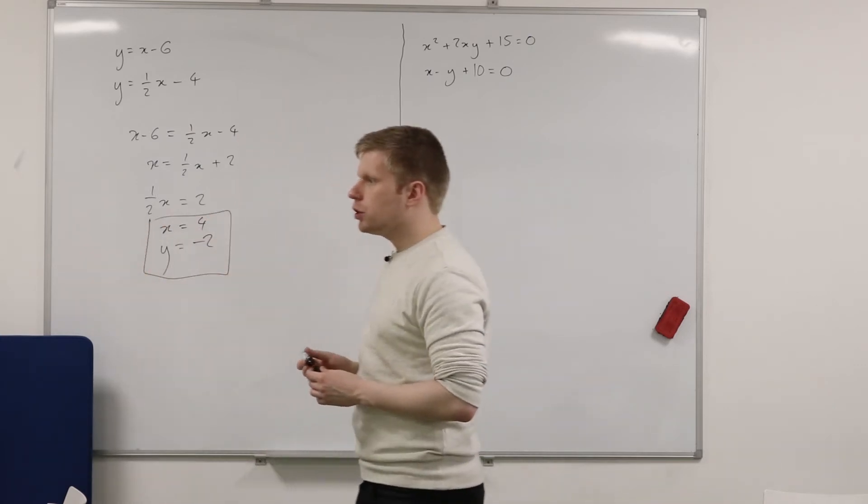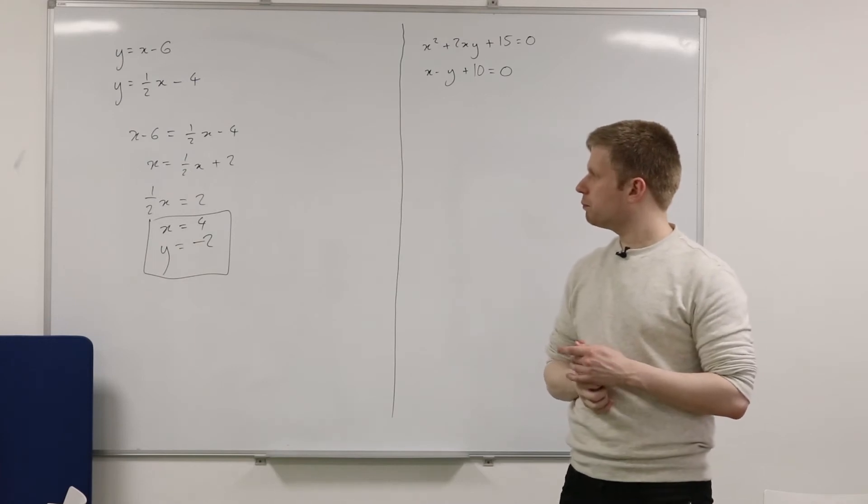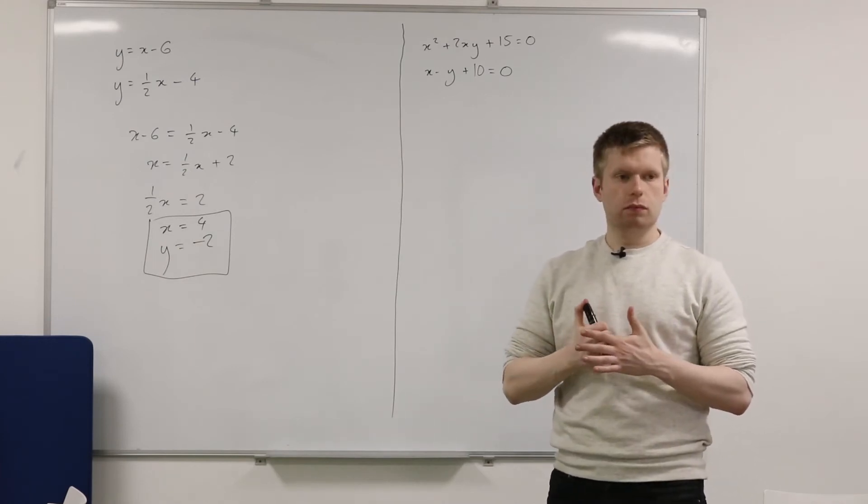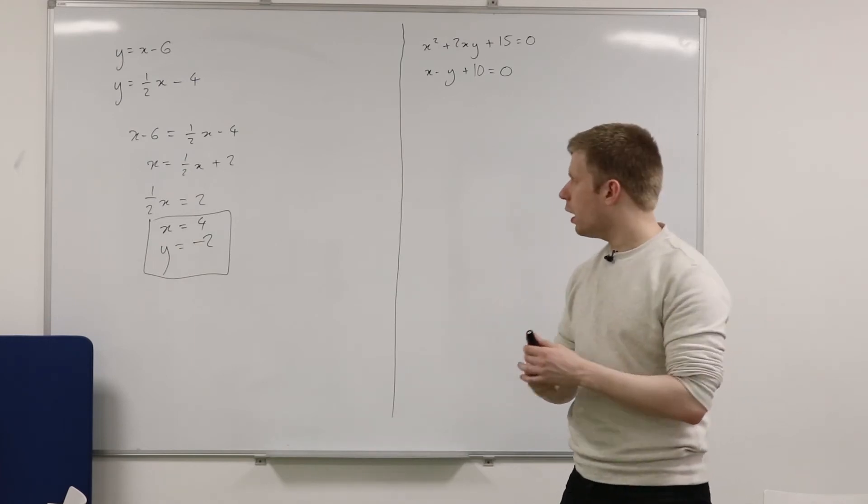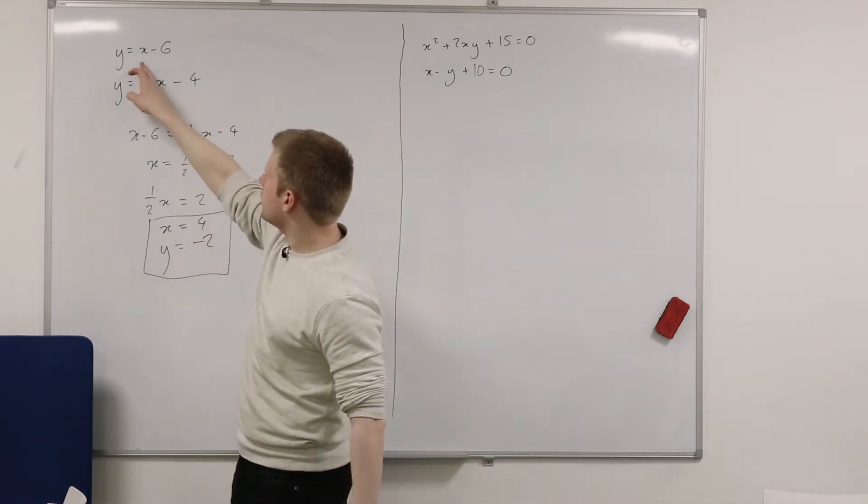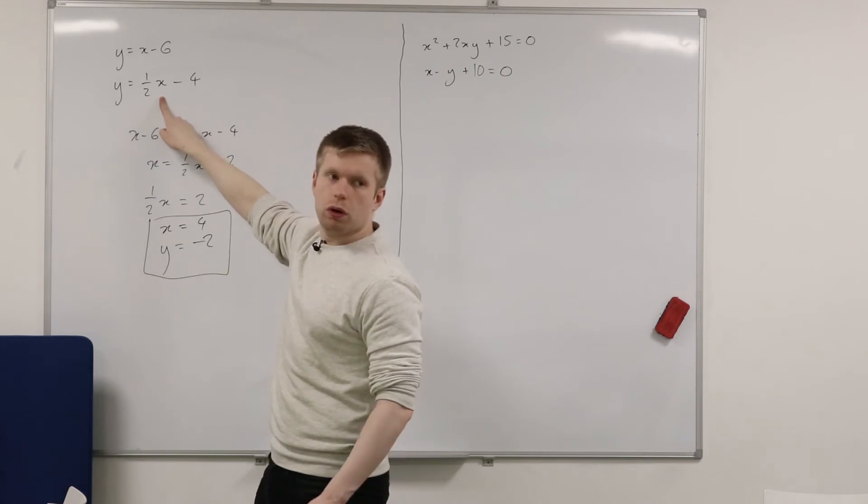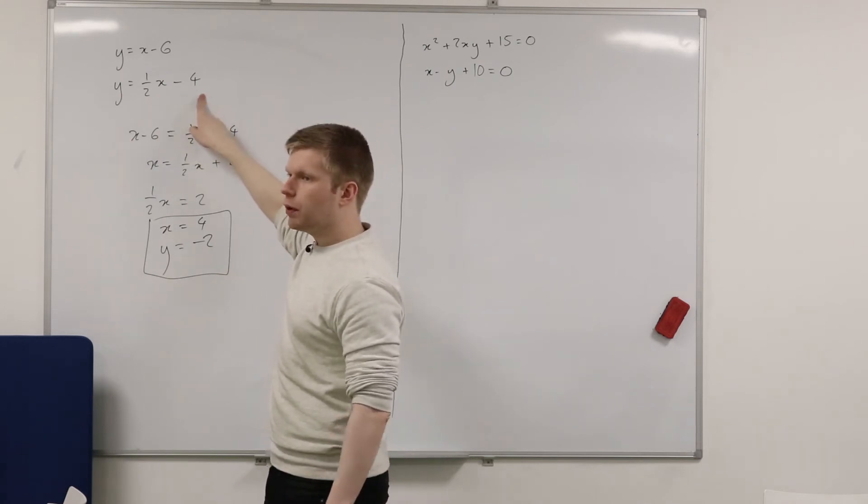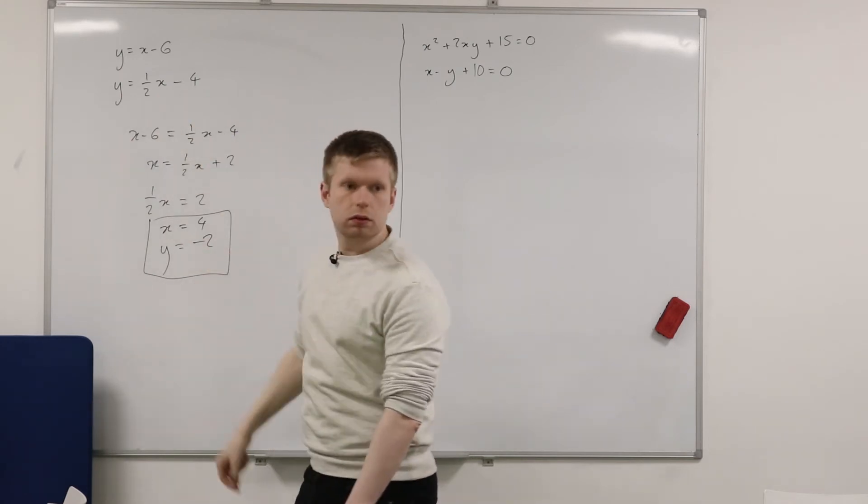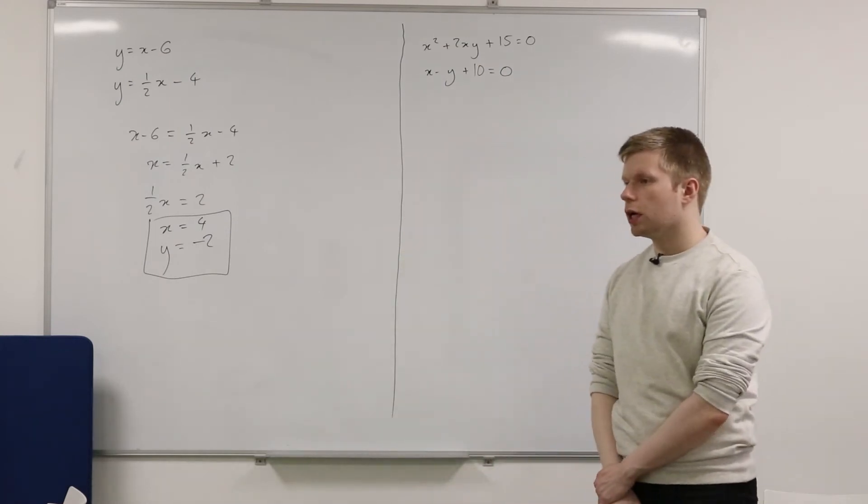Now, how could I check that? How could I check to make sure I've done this right? Put it in one equation. Yeah, I could check it in the other equation. So I just stick X equals 4 in that equation. Let's just check it. What's half of 4? 2. What's 2 take away 4? Negative 2. So that also works. So it's a good check that you can use there.